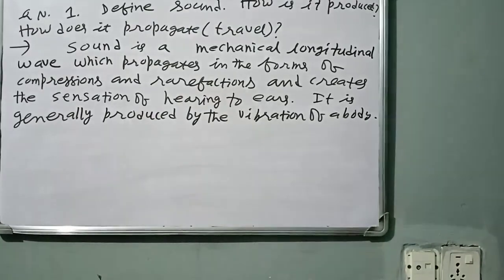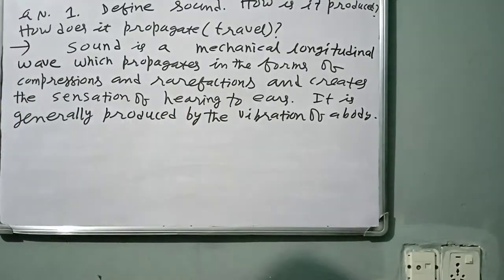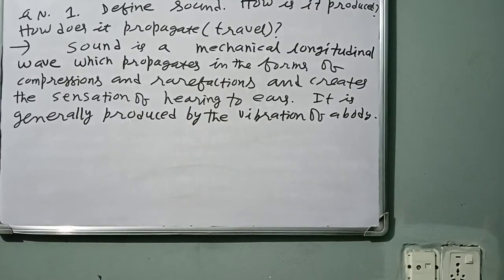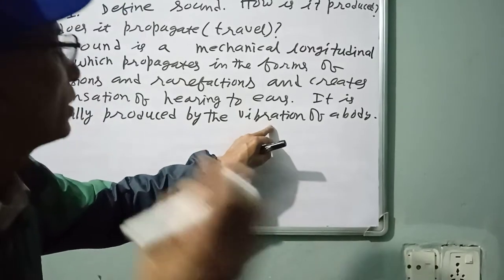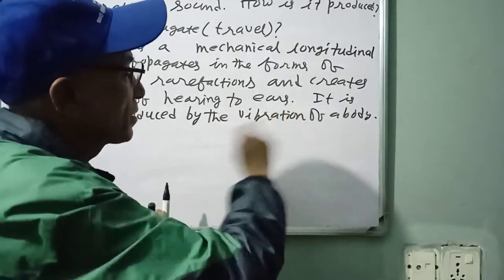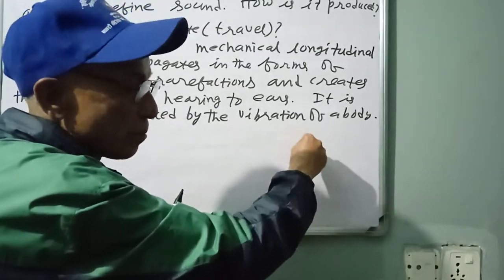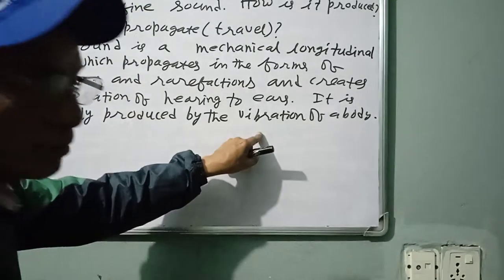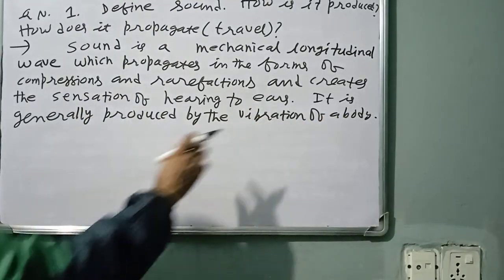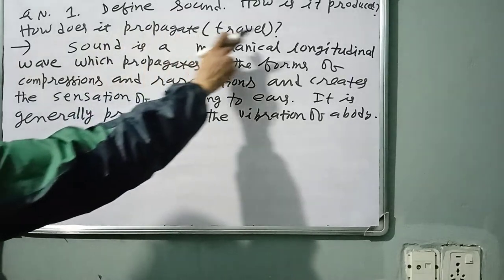Vibration is a to-and-fro motion — backward, forward, right, left, up, down. Sound is generally produced by the vibration of a body; if there is vibration, sound is produced. If there is no vibration, sound is not produced. For example, when a bell vibrates, you hear sound; when you hold the bell to stop its vibration, sound stops.